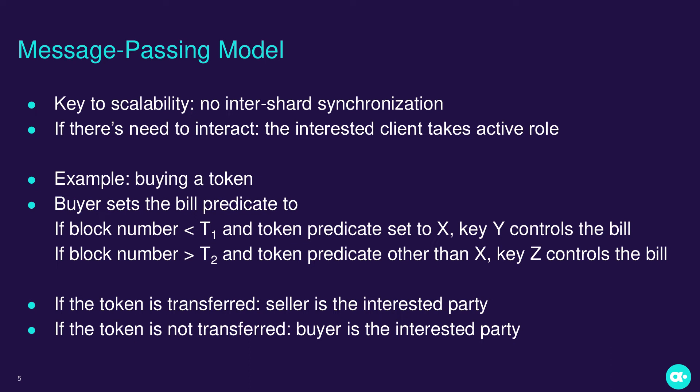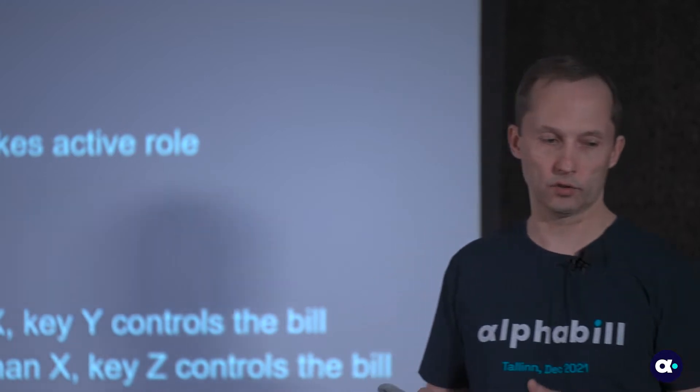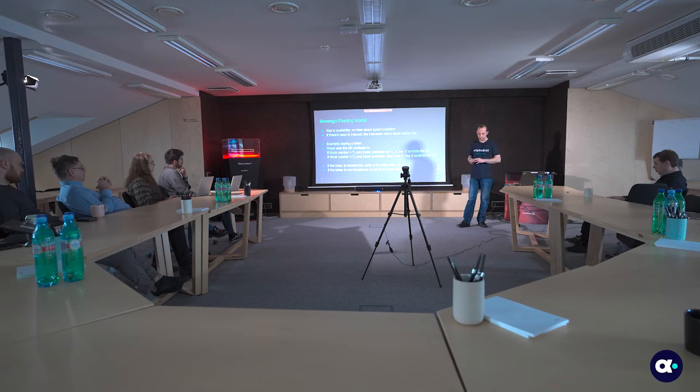What is quite different in Alphabill is that the whole architecture and data model is based on bills which are independent of each other. The key to scalability is that the history and state of each bill can be verified independently of others — there is no inter-shard synchronization and no global state. To verify there has been no double spending, you only need to look at the local history of that one bill, with no cross-shard dependencies.